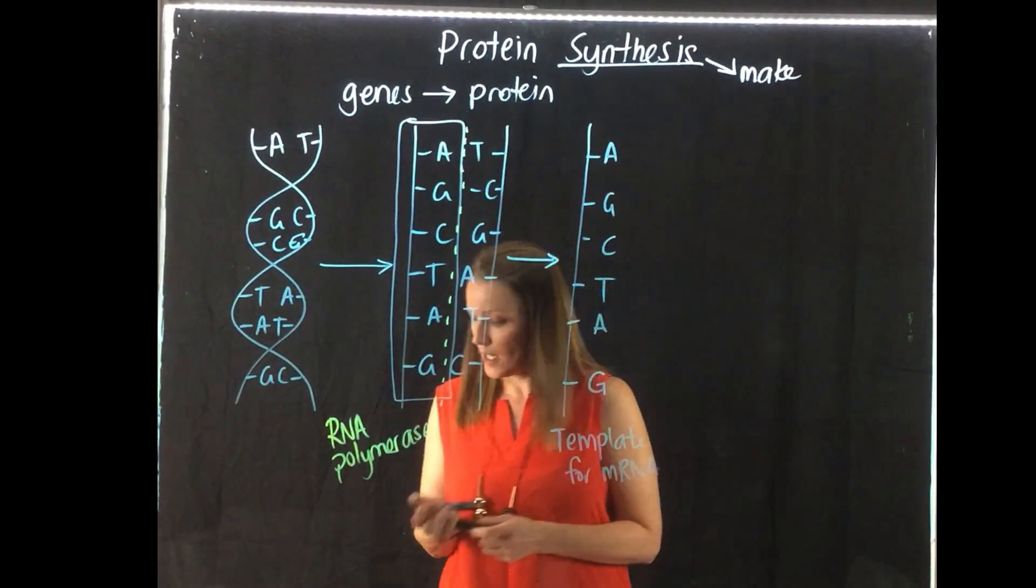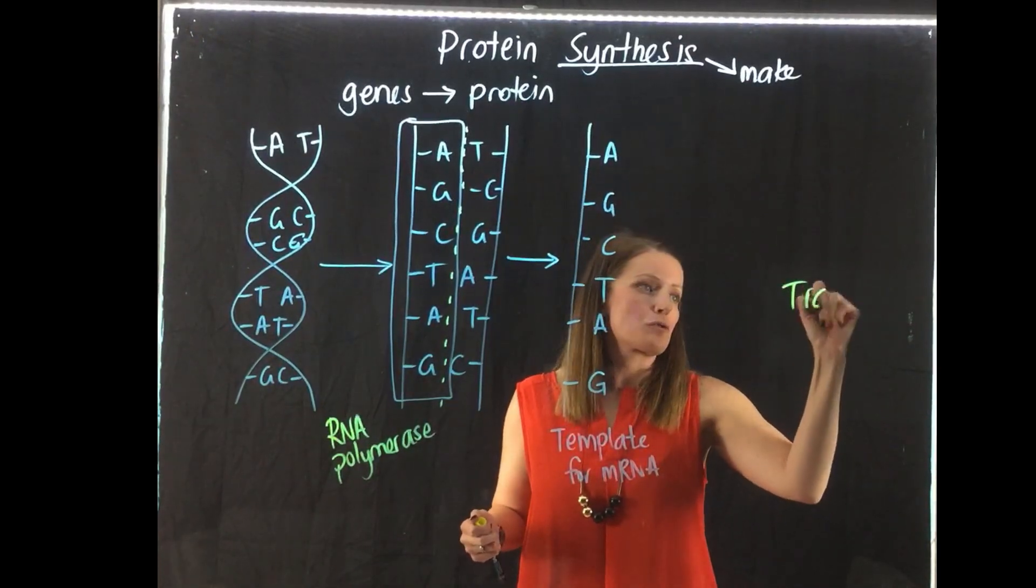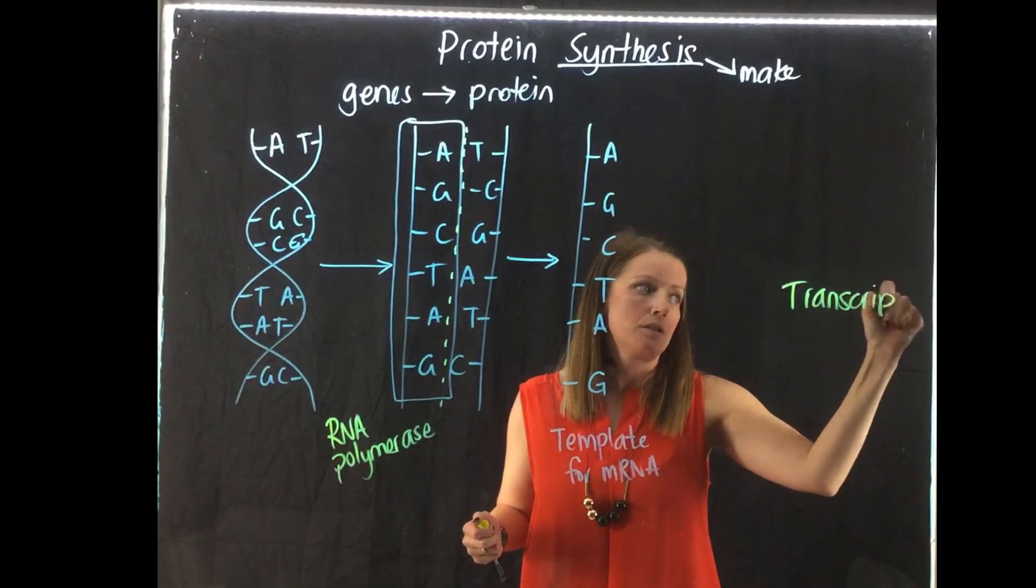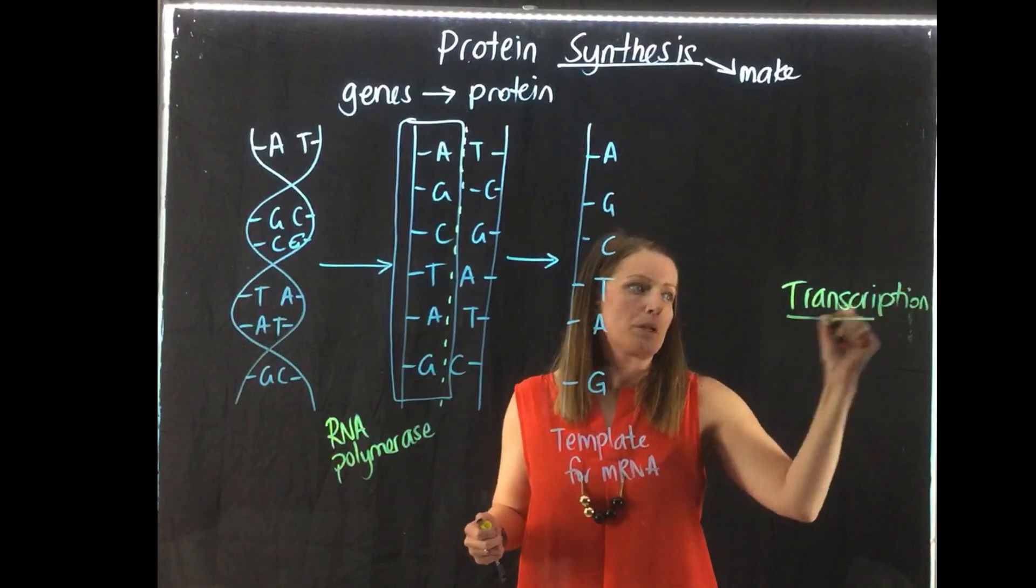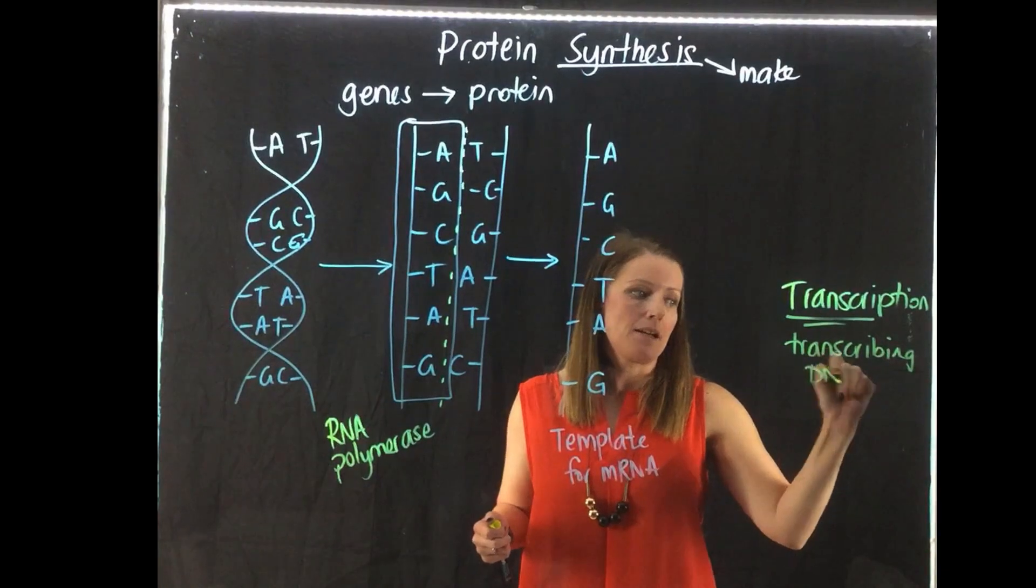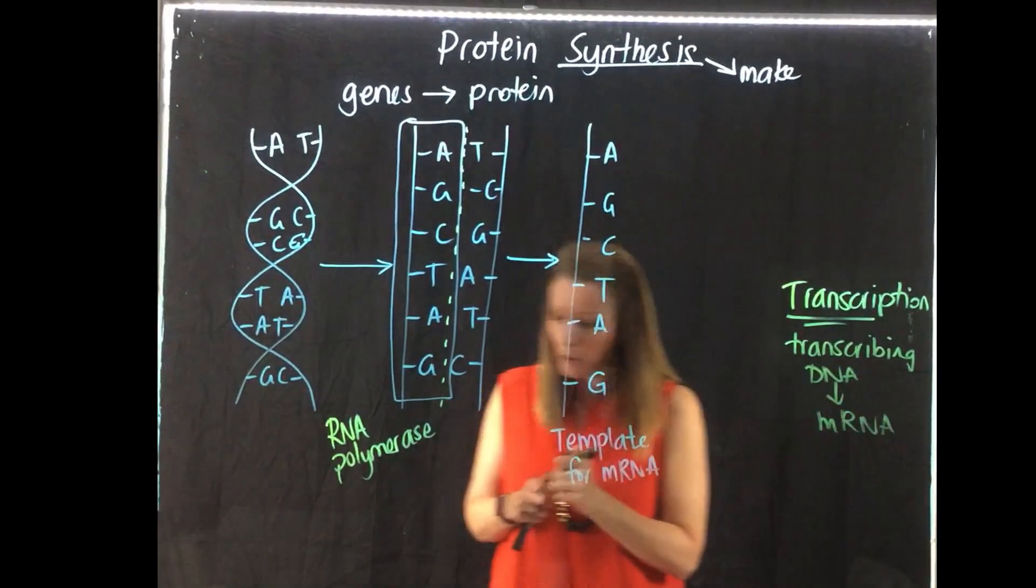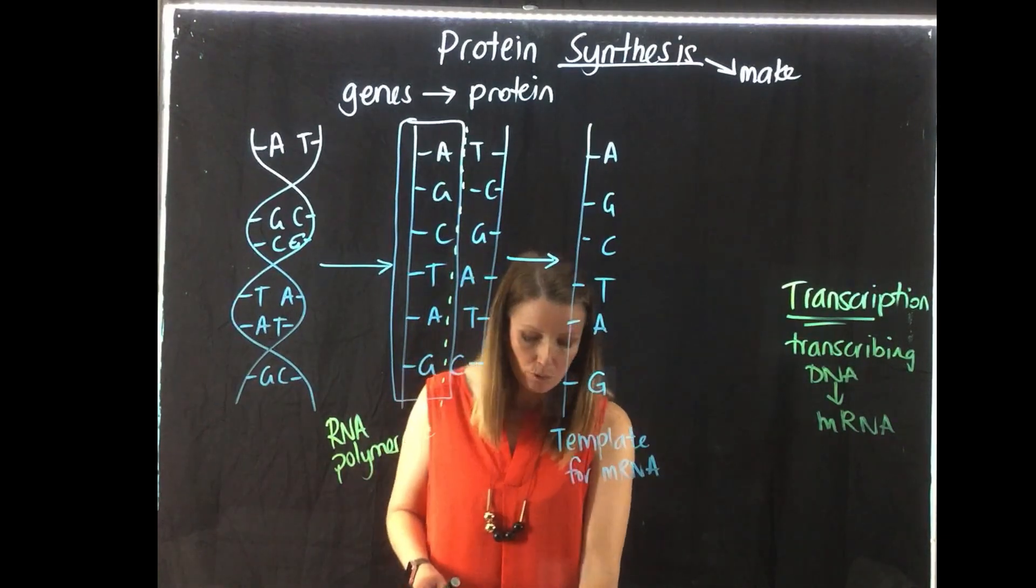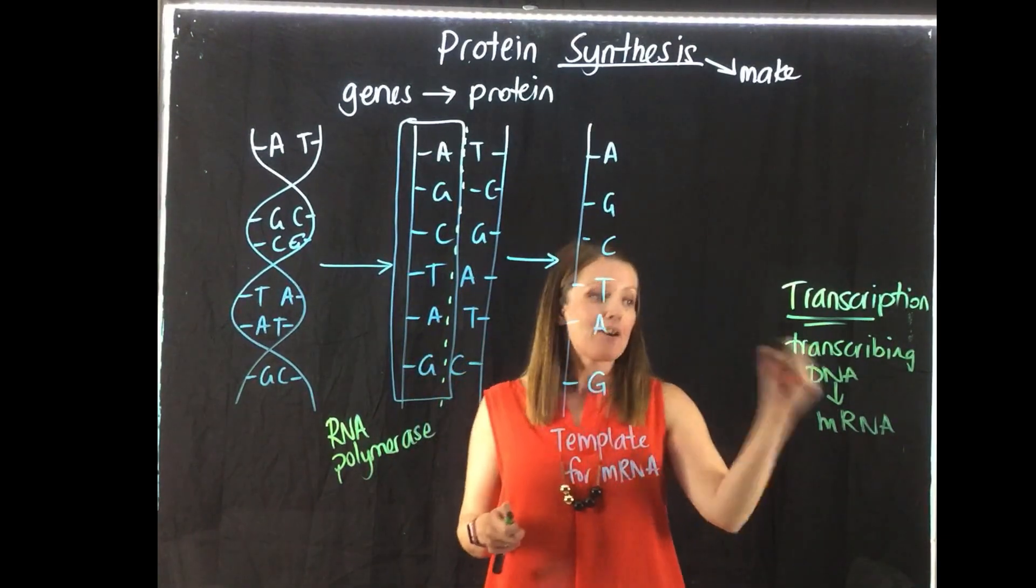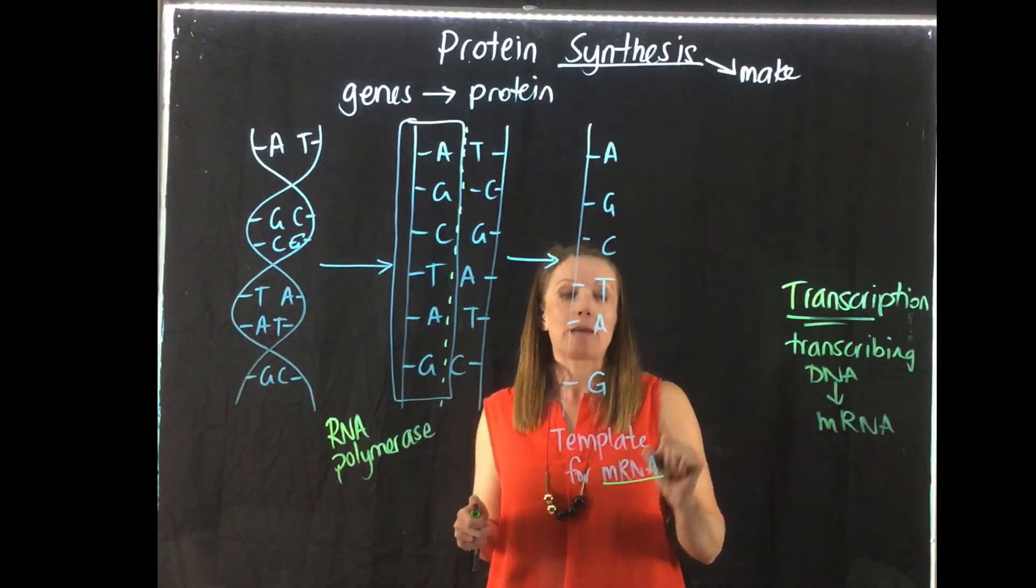So again, we put our base pairs. But this time, we only want to use one strand as a template for our protein synthesis. So the first thing we need to do is create mRNA. So just like we had in DNA replication, we have a protein, this time called RNA polymerase, which acts as the scissors that breaks the bonds between the bases. So what we then have is our template for our mRNA. So this process here is called transcription.